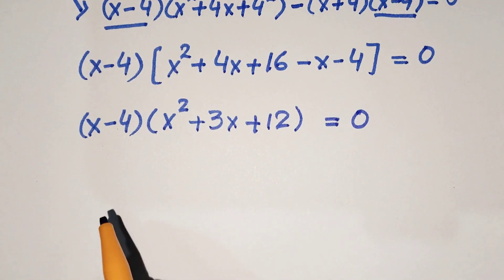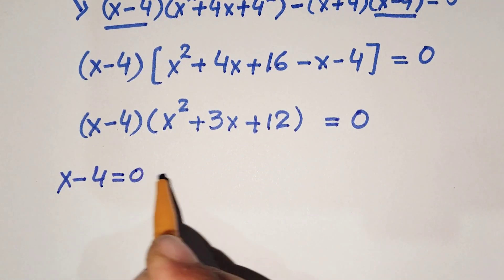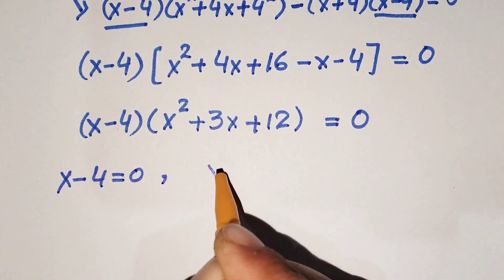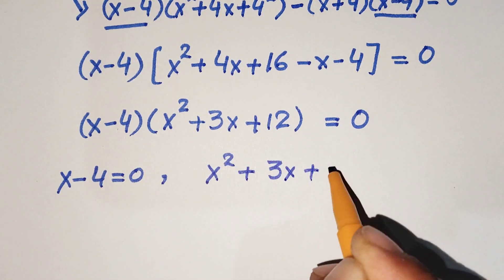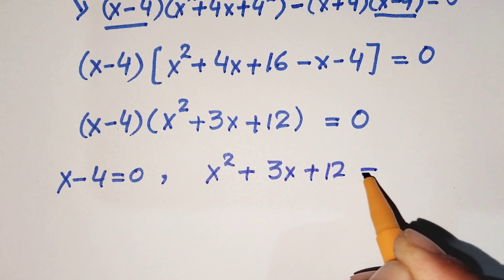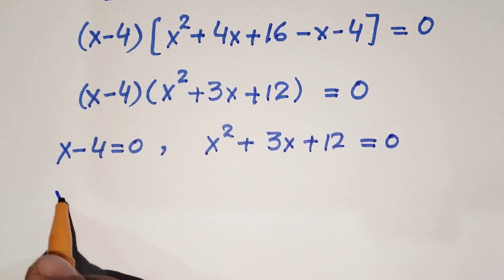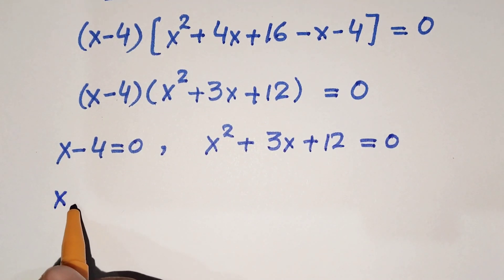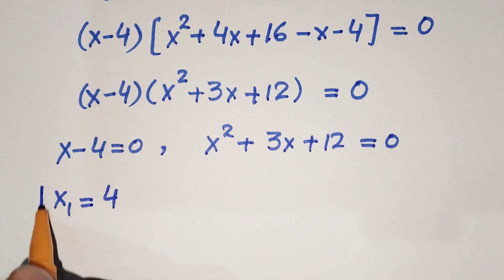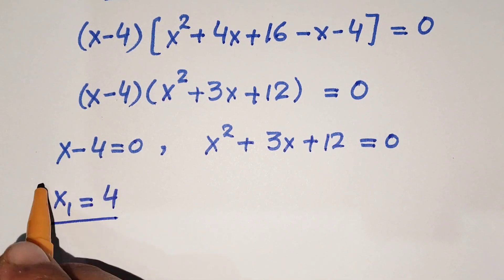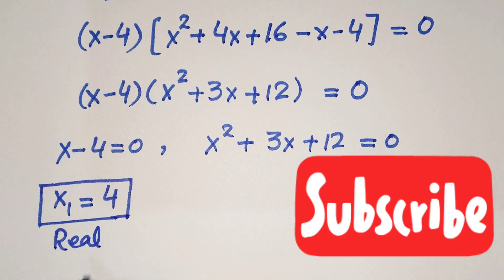We now have two conditions. The first is x minus 4 equals 0, and the second is x squared plus 3x plus 12 equals 0. From the first condition, x₁ equals 4, which is our real solution.